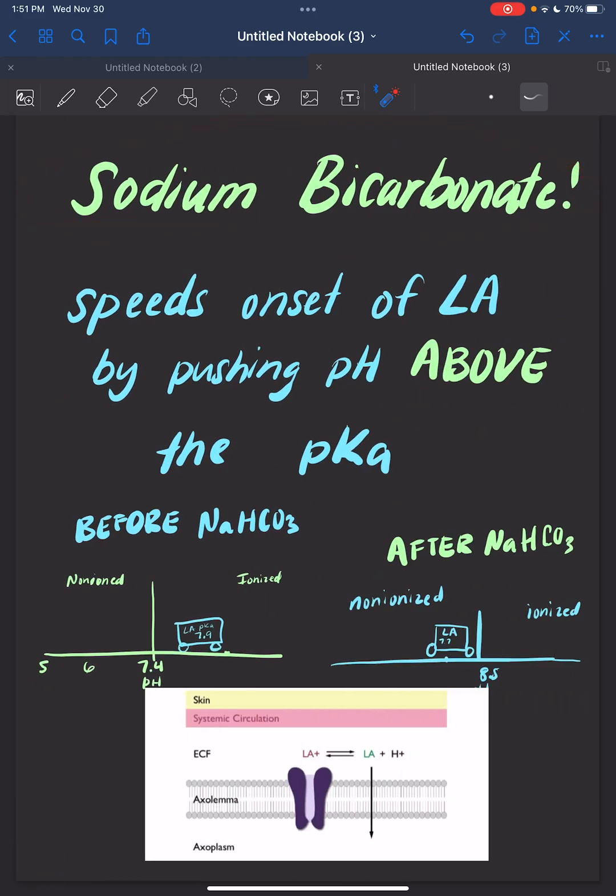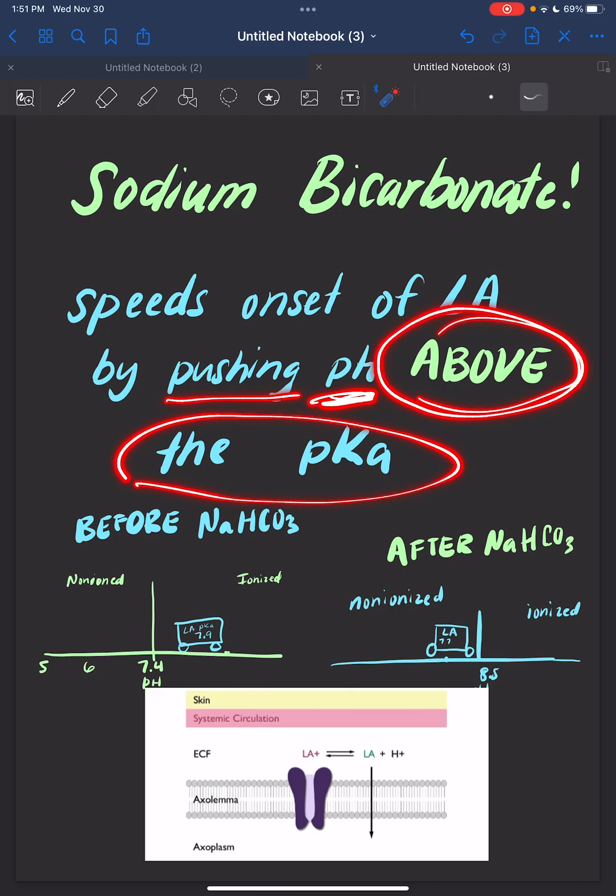Sodium bicarbonate speeds the onset of the local anesthetic by pushing the pH above the pKa. Before, where our local anesthetic was over here, before the pH, now when we inject bicarb, it's going to push the pH higher above the pKa so the non-ionized form predominates.